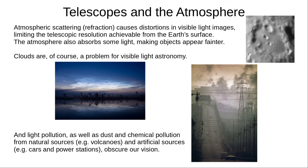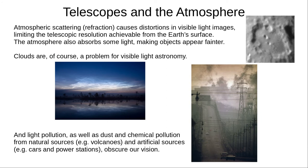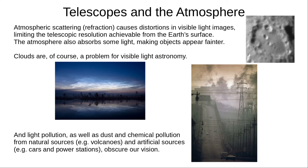The atmosphere also absorbs some light, making astronomical objects appear fainter. Cloud cover makes visible light astronomy temporarily impossible. And light, dust, and chemical pollution, from natural and artificial sources, can obscure our vision.